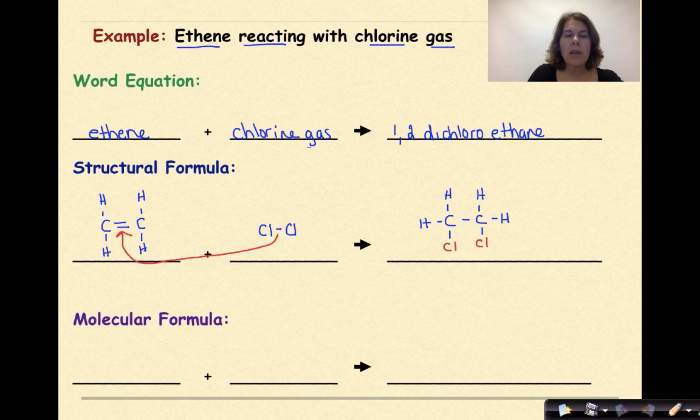So what would this look like in a molecular formula? Well, we'd have C2H4 plus Cl2 representing our diatomic chlorine. And then for our molecular formula here, we'd have C2H4Cl2.